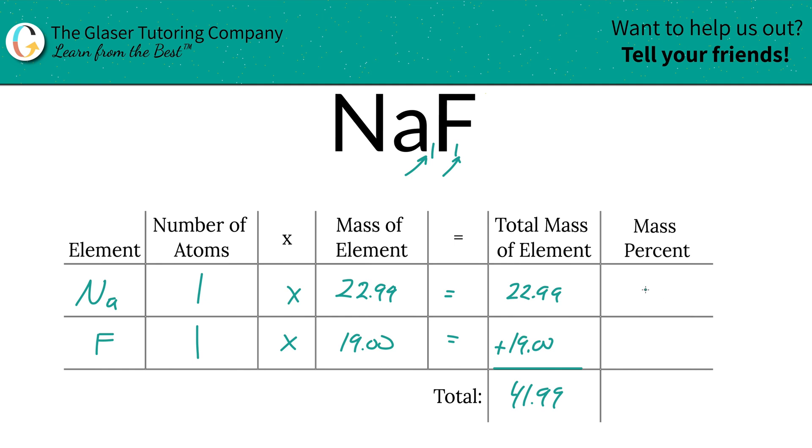So to find the mass percent of sodium, we're going to take the total mass of that sodium, 22.99, and divide it by the total mass of the entire compound. This is a simple percentage calculation, part over whole times 100. Don't worry about the units, they're going to cancel. It doesn't matter if you use grams per mole or AMU. So when we do this math out, it becomes 54.75%, and that is the percent of sodium in sodium fluoride.